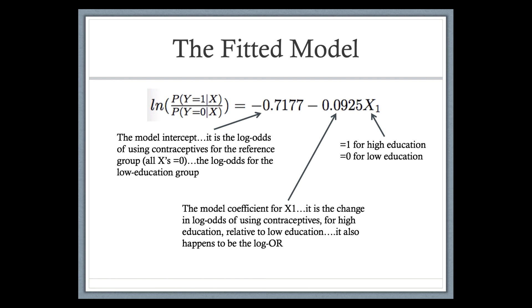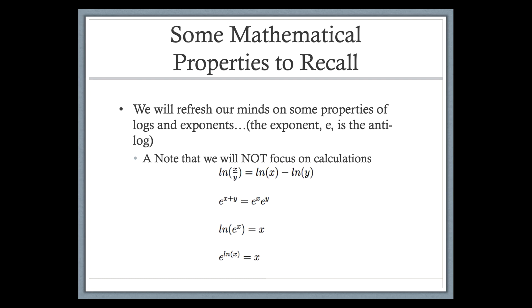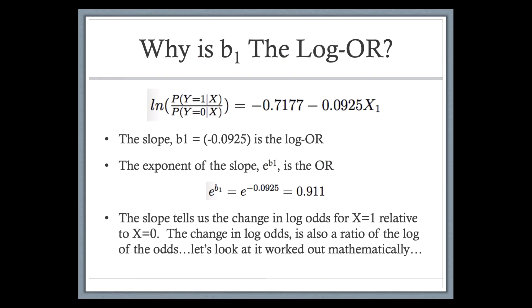The next few slides go over why b1 is the log odds ratio — this is just to justify it; you don't need to fully follow all the mathematics. As a reminder of some properties of logs and exponents: the log of (x/y) can be written as log(x) minus log(y); e to the (x+y) can be written as e to the x times e to the y; the log of e to the x is x; and e to the log(x) is x. The log is the anti-exponent, just like subtraction is the anti-addition. You won't be asked to calculate these by hand.